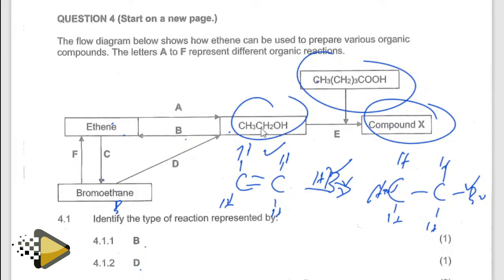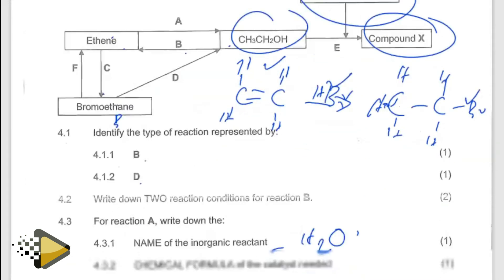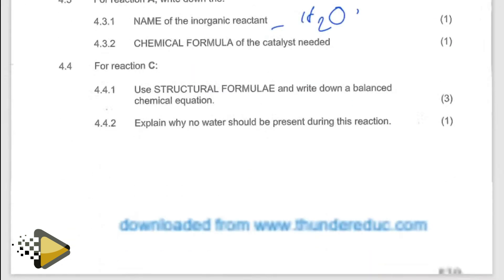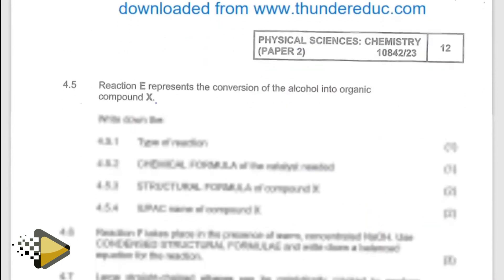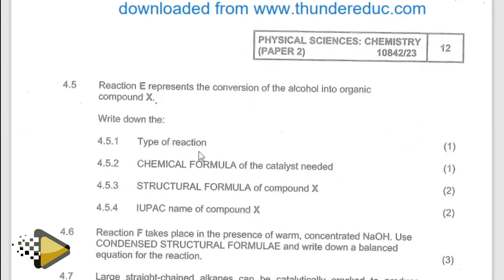There are five carbon atoms. So it's going to be — not propanoate — pentanoate, because five. If this compound is going to become ethyl pentanoate. The type of reaction is esterification — we know that. The catalyst used is sulfuric acid. Whenever you talk about esterification: sulfuric acid.